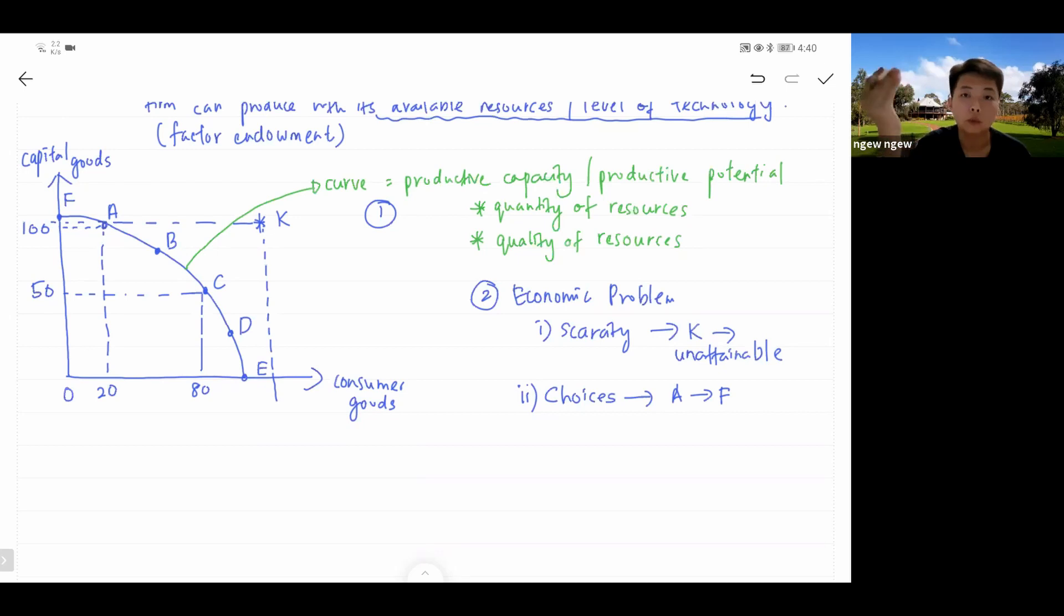Let's say governments might prefer to produce more consumer goods rather than capital goods, then government might go for choice or combination D, E, or C. And if it is firms, then it is highly depending on consumer preference, because consumer preference will determine firms' sales and therefore determining firms' profit.